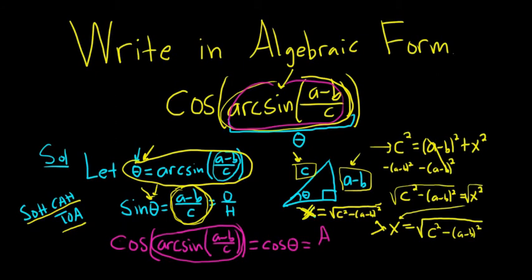So it's adjacent over hypotenuse, right? SOHCAHTOA, adjacent over hypotenuse. So the adjacent is the X. So that's going to be square root C squared minus parentheses A minus B squared. And the hypotenuse is C. And so that is the final answer. I hope that made sense. Now let's go. Thank you.